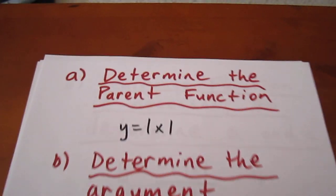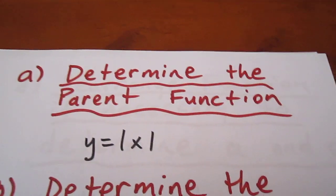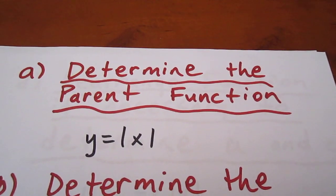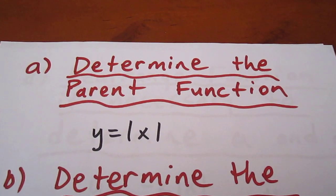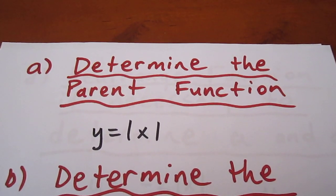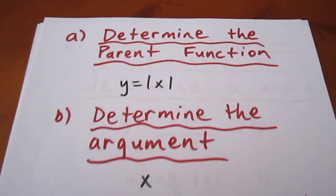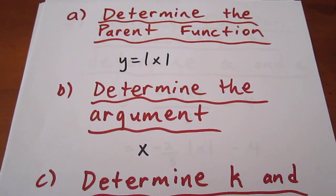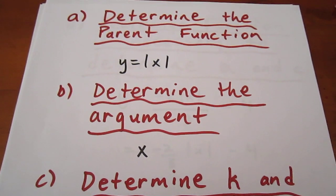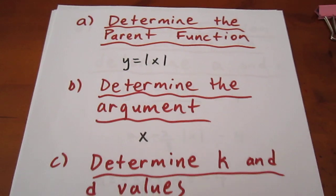The first thing we want to do is determine the parent function. In our case, it's y equals the absolute value of x. We then want to determine the argument, and in our case, the argument is simply x.